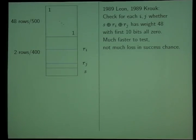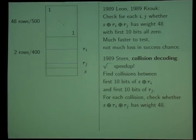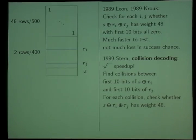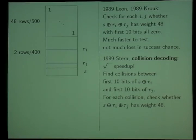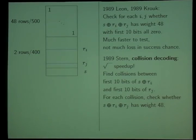Then Stern — the gold standard in these algorithms for many years, which we call collision decoding — said: hey, there's a square root attack here. S plus Ri plus Rj having the first 10 bits all zero is the same as saying S plus Ri's first 10 bits equal Rj's first 10 bits. Now we've separated i and j. So Stern says: look through the Ri's, take the first 10 bits of S plus Ri, put them in a hash table, then look through the first 10 bits of all the Rj's and do a match or hashing. You get a very fast iteration. Once you've found collisions between the S plus Ri and the Rj, you check the weight of those collisions S plus Ri plus Rj.